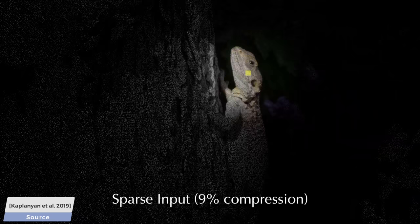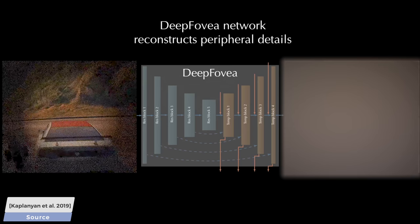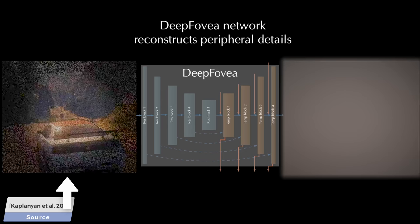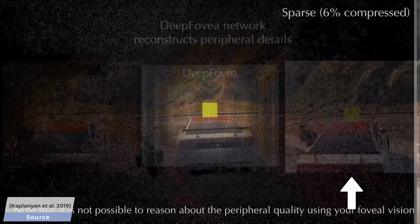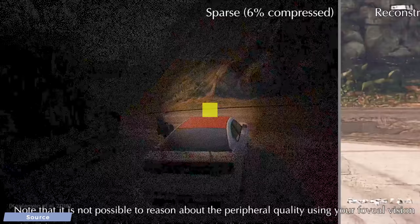Well, hold on to your papers, because this new work can reconstruct a near-perfect image by looking at less than 10% of the input pixels. So, we have this as an input, and we get this. Wow! What is happening here is called a neural reconstruction of foveated rendering data, or you are welcome to refer to it as foveated reconstruction in short, during your conversations over dinner.